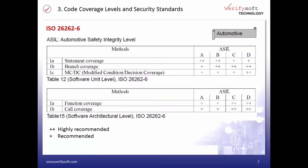ISO 26262 is the standard of the automotive industry for the functional safety of road vehicles. The required code coverage depends on the ASIL level — Automotive Safety Integrity Level. For ASIL A, only statement coverage is highly recommended. For ASIL B, the higher level branch coverage is required. For the highest level, ASIL D, MCDC coverage needs to be achieved. To prove that you have achieved the requested levels, a good code coverage tool like Testwell CTC++ is needed.